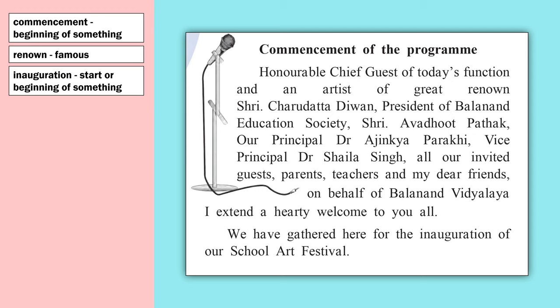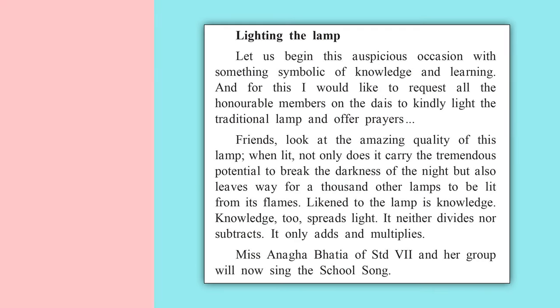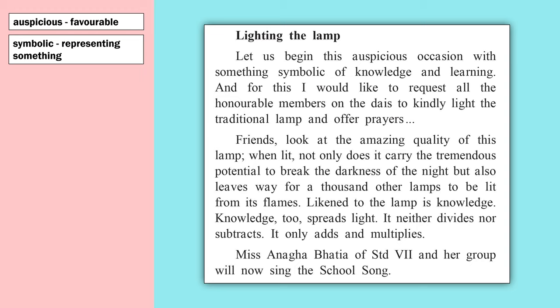Lighting the lamp. Let us begin this auspicious occasion with something symbolic of knowledge and learning. For this, I would like to request all the honorable members on the dais to kindly light the traditional lamp and offer prayers. 'Auspicious' means favorable. 'Symbolic' means representing something — to jo chiz knowledge ko represent karti hai, us se hum is auspicious occasion ki shuruaat karte hain. Sare honorable members jo dignitaries hain unko dais par aane ke liye request karte hain — traditional lamp jalane aur prayers karne ke liye.